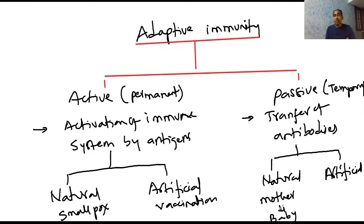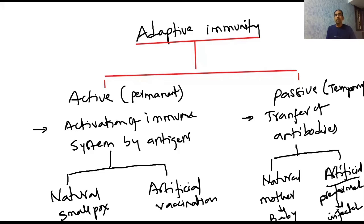Until the baby develops its own immune system. In artificial passive immunity, preformed antibodies are transferred into the infected person. These antibodies are generally injected during emergencies — for example, in case of snake bite or tetanus — to fight the antigen immediately. This provides an immediate response, but these antibodies cannot stay for a longer period, so this type of immunity is temporary.